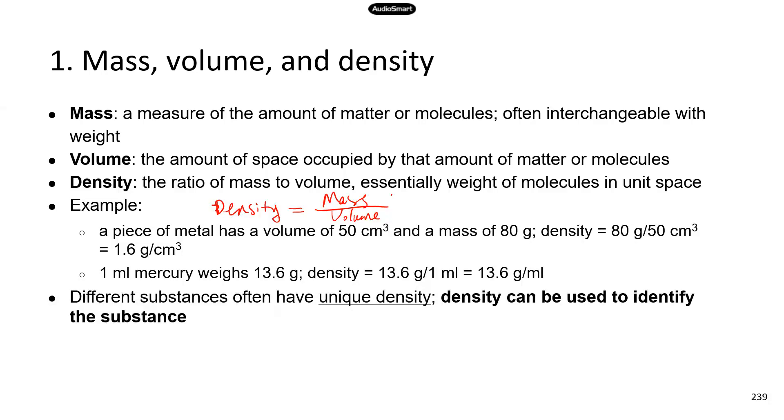And here's an example. A piece of metal has a volume of 50 cubic centimeters and a mass of 80 grams. So the density would be mass divided by volume, 80 divided by 50, and that's 1.6 grams per cubic centimeter. So that means per cubic centimeter, you're going to have 1.6 grams of that particular metal.